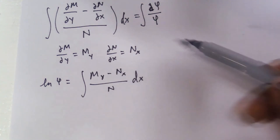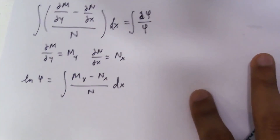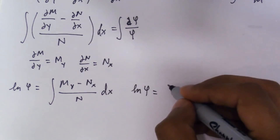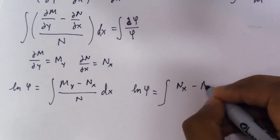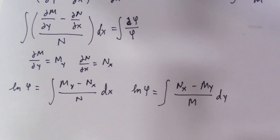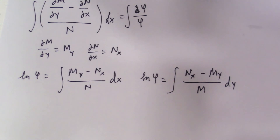That wraps up this video. I'm going to rewrite the second equation next to the first so you can compare both. You have the two integrating factor formulas — one for phi as a function of x and one for phi as a function of y — and you can use these on your tests, finals, or homework. If you have any homework questions, please comment below or send me a message, and I'll try to do your homework problem before it's due. See you next time.